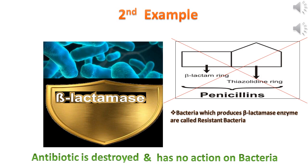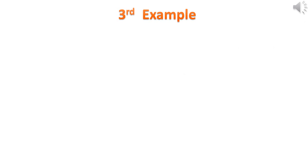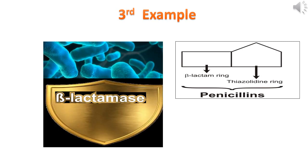Bacteria which produce beta-lactamase enzyme are called resistant bacteria. Resistant bacteria produce resistant infections, and resistant infections cause severe infections. To protect penicillins, we will send a bodyguard along with penicillin.